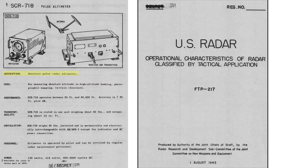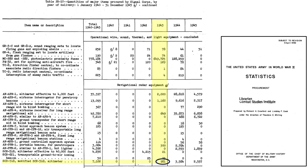The SCR-718 is classified as an absolute radar pulse altimeter. The system operates at altitudes between 50 and 40,000 feet with an accuracy of plus or minus 50 feet plus one-quarter percent. The unit weighs 40 pounds installed, consumes 135 watts of power, and was issued in late 1943. The U.S. ordered 981 systems in 1943, 3,584 in 1944, and 2,537 in 1945, as seen on a table from an Army World War II statistics procurement document.